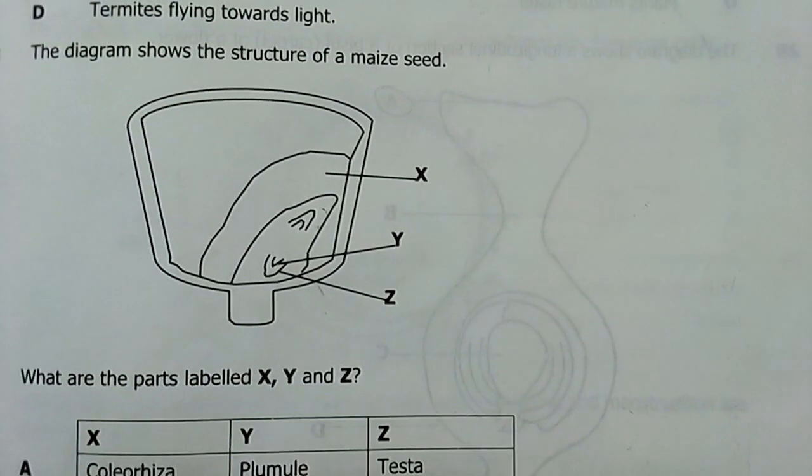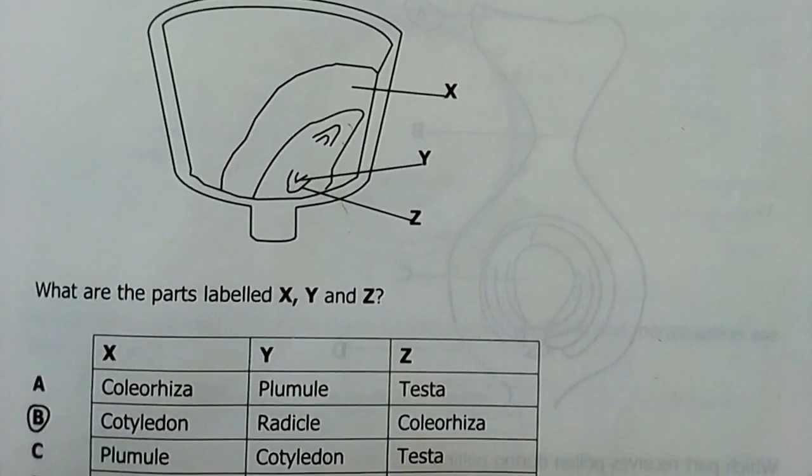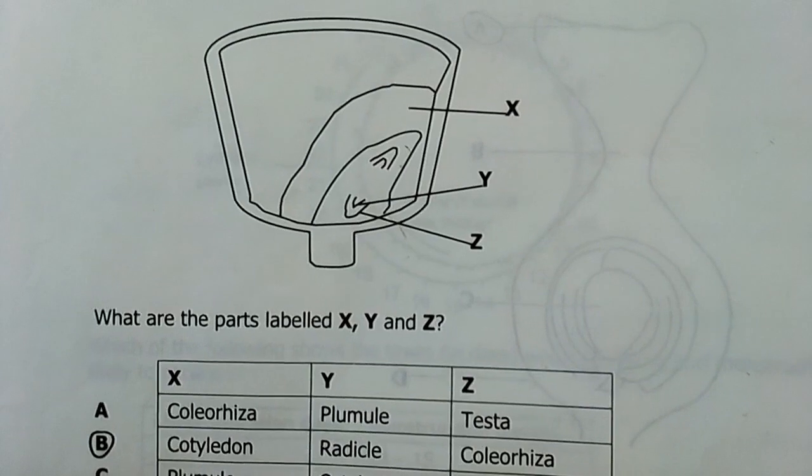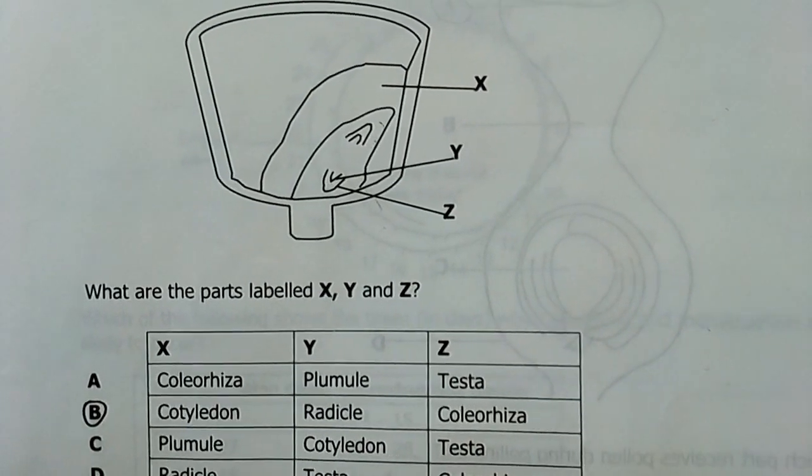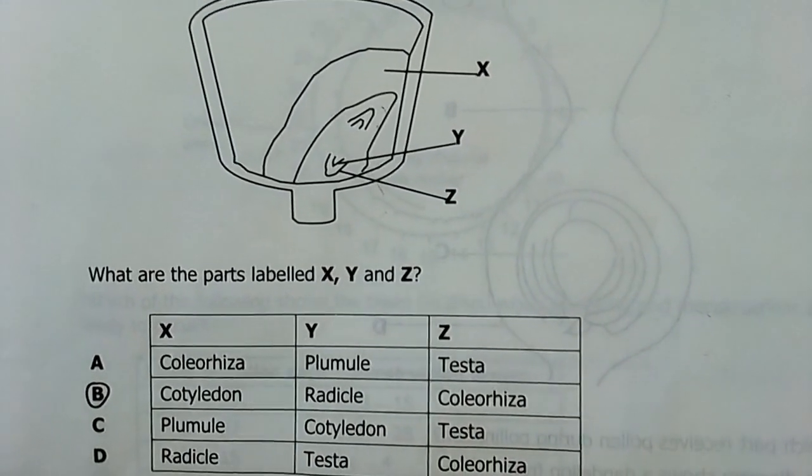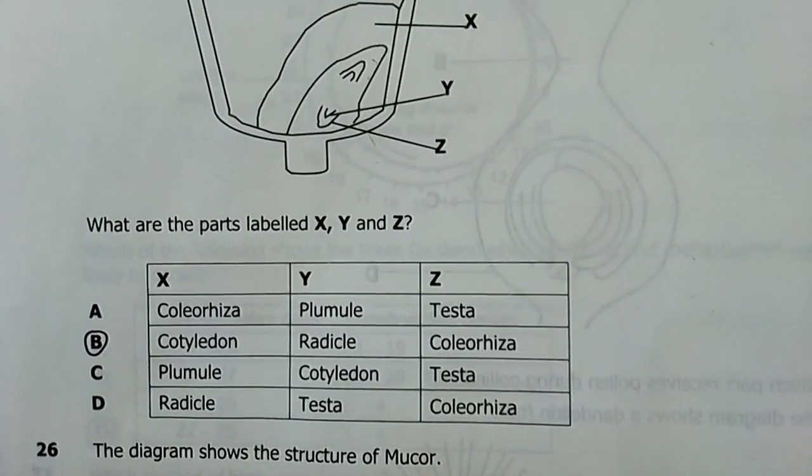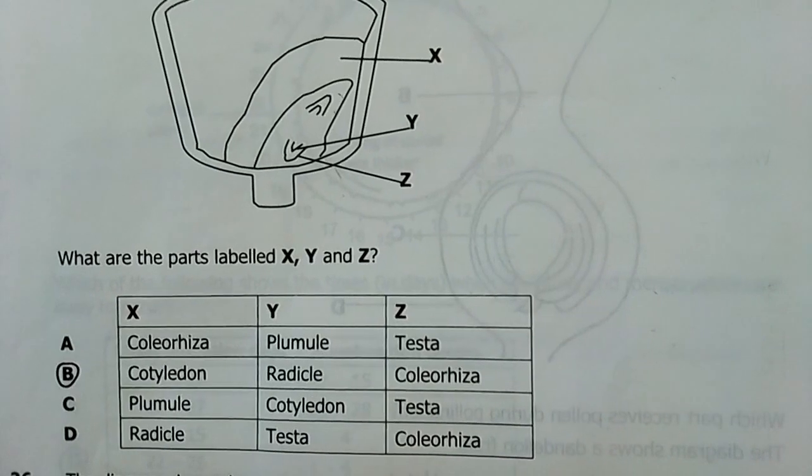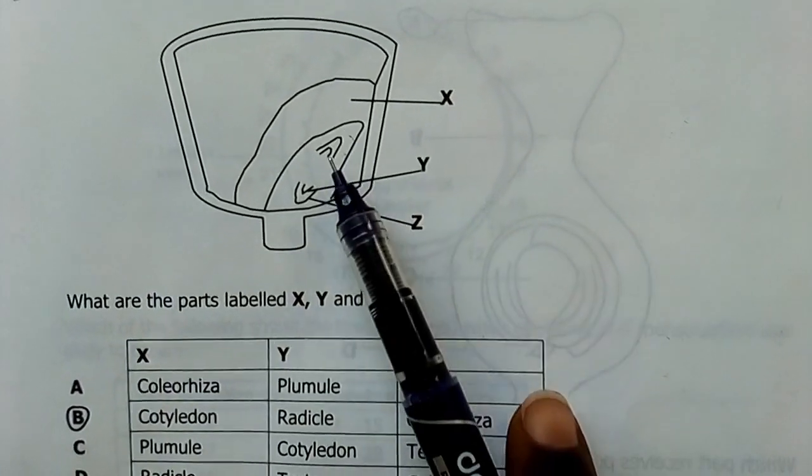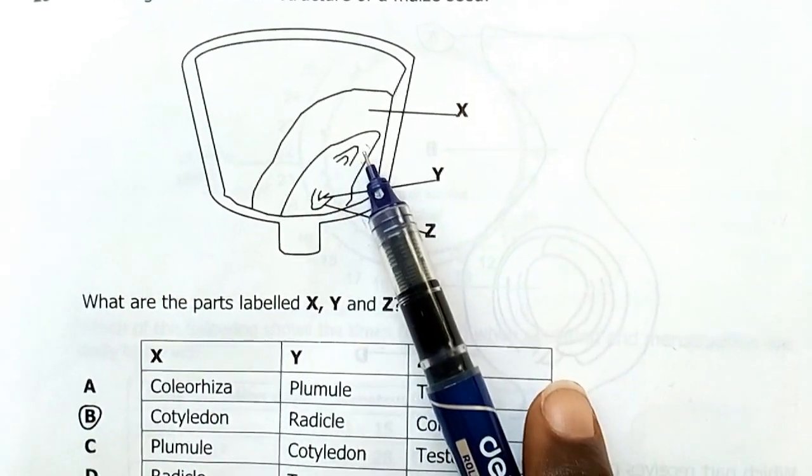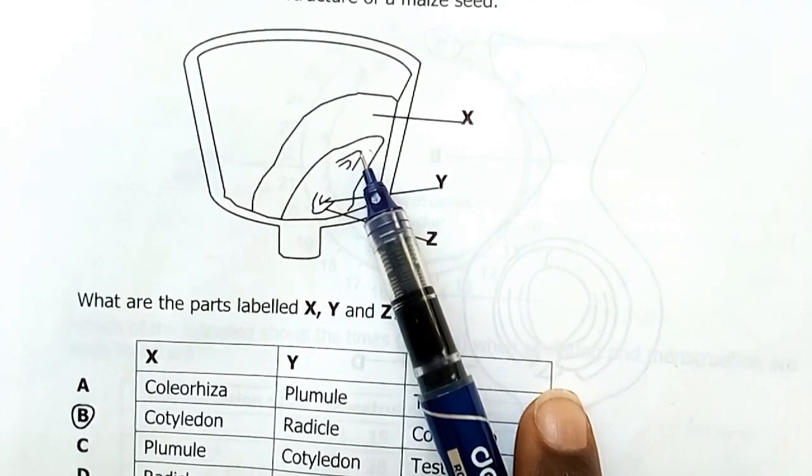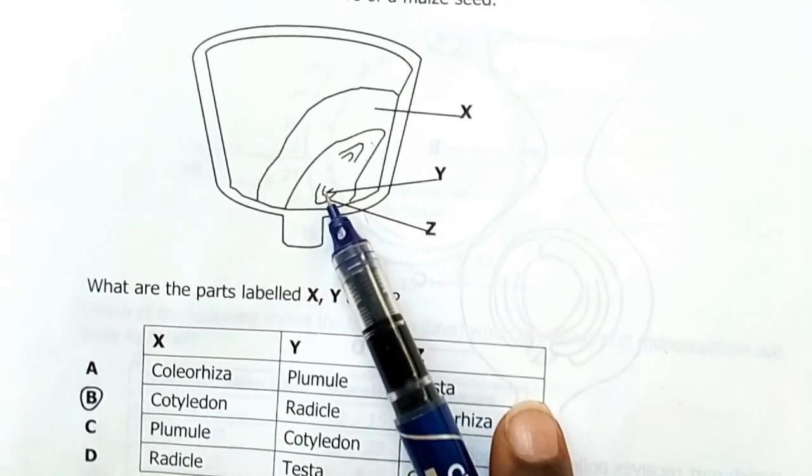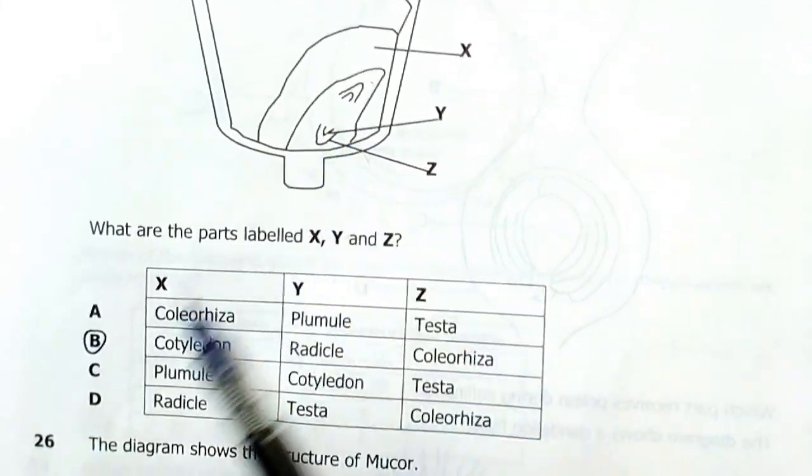25, the diagram shows the structure of a maize seed. What are the parts labeled X, Y, Z? X is our cotyledon, Y is our radicle, and then Z is our coleorrhiza. This here is our plumule, and this part here is our coleoptile, the sheath to the plumule. This is the sheath or the cover to the embryonic root. So, my answer here was B.